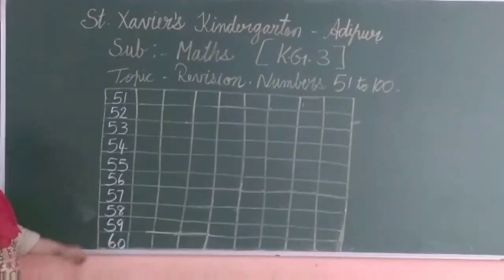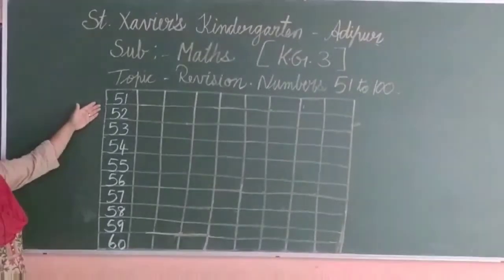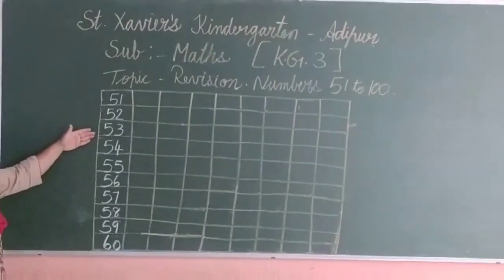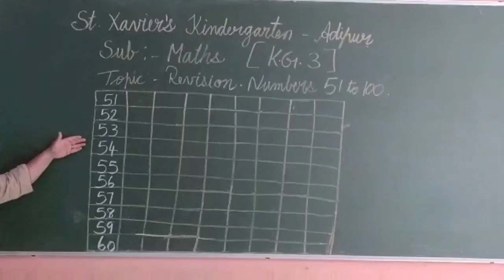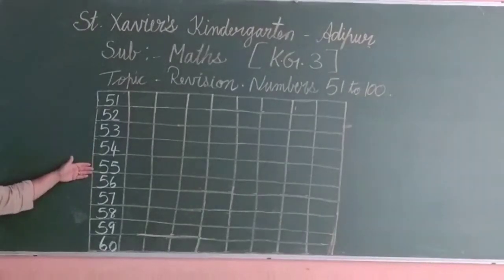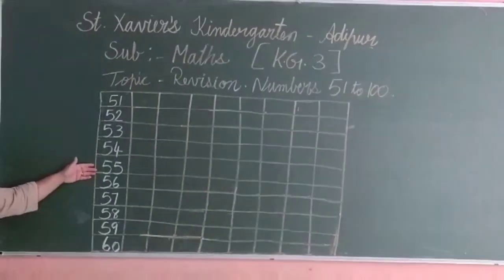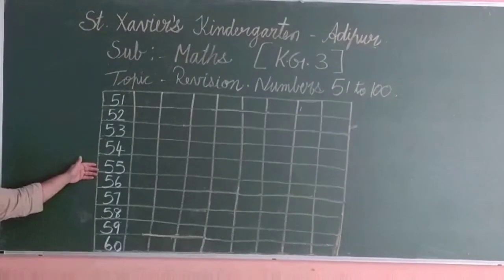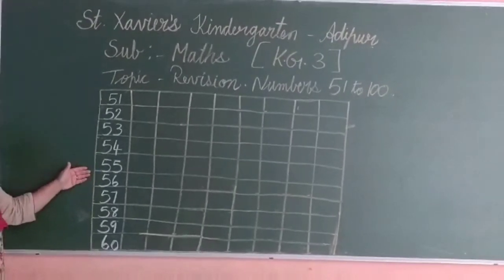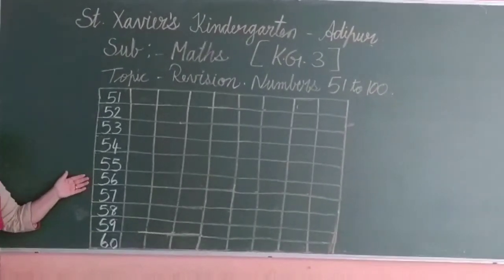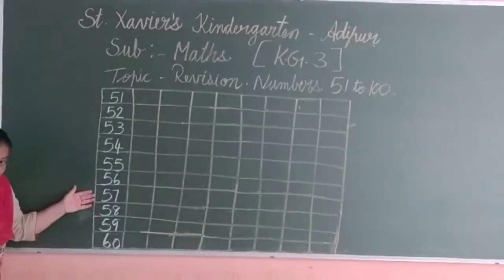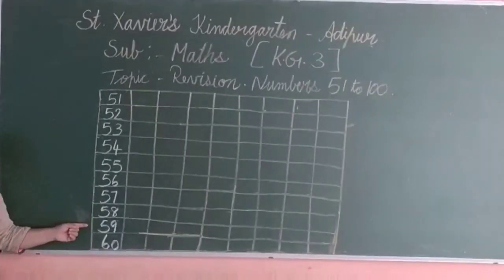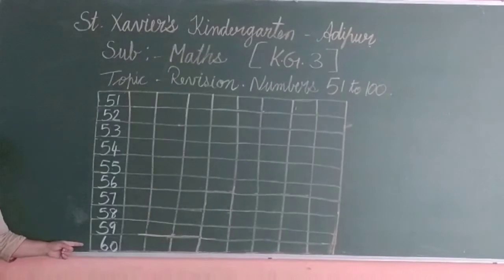So students, once more: 51, 52, 53, 54, 55. Aap jaysay 55, 56 bolenghe, uski saab mein aapko likhte bhi jana hai. 57, 58, 59, 60.